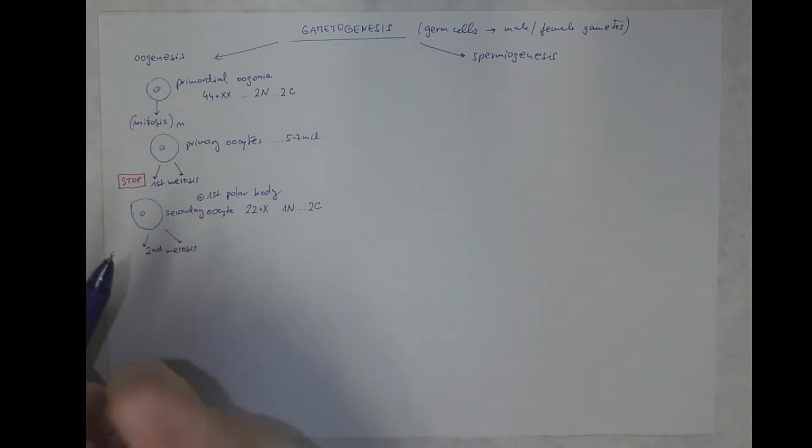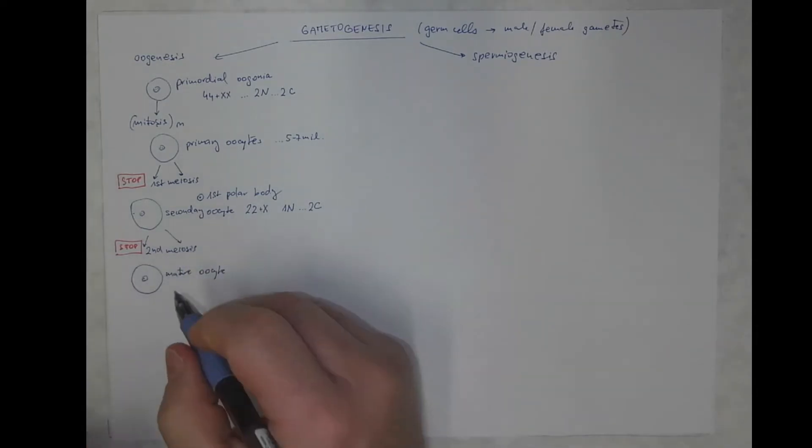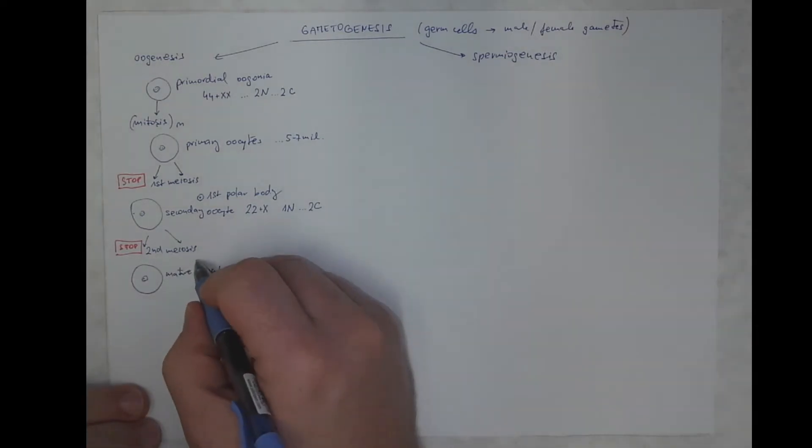but again, it's arrested there, and only oocytes that are fertilized will complete that second meiotic division, thus becoming mature oocytes. The other cell resulting from second meiotic division is a second polar body, a very small cell.